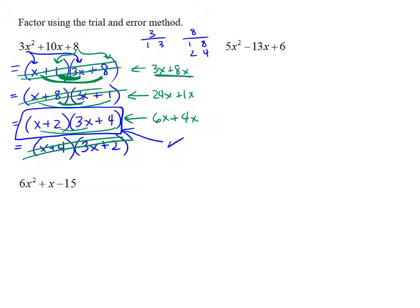Let's do a full check to make sure. So if we do a full check, 3x² for the first term, plus outside would be 4x, plus inside would be 6x, plus 8 for the last term. And when you multiply that out, we get 3x² + 10x + 8. That's exactly where we started.